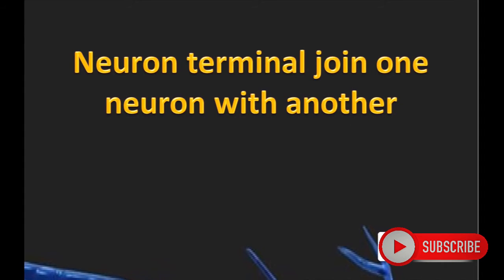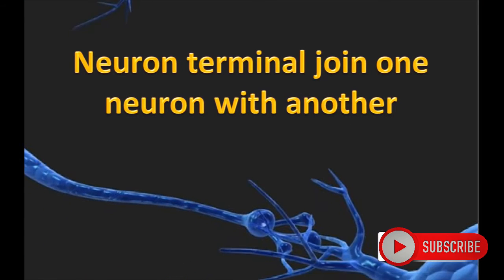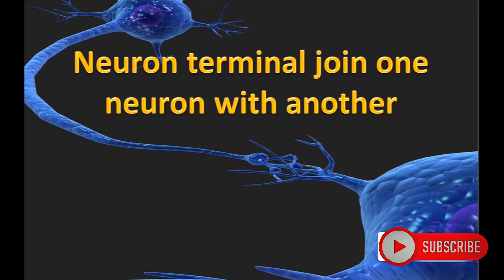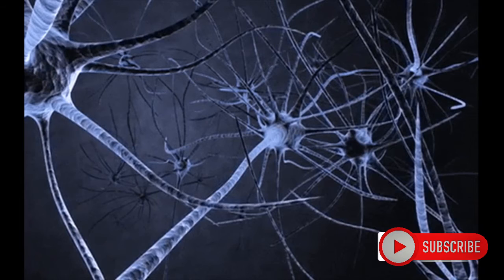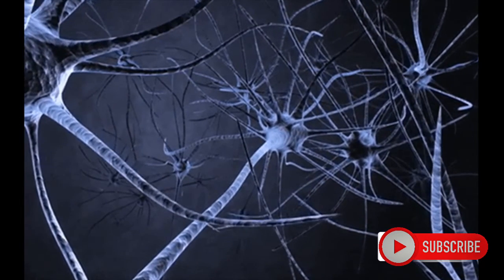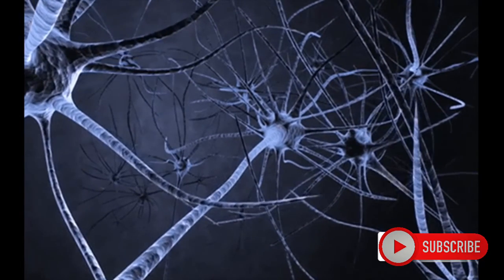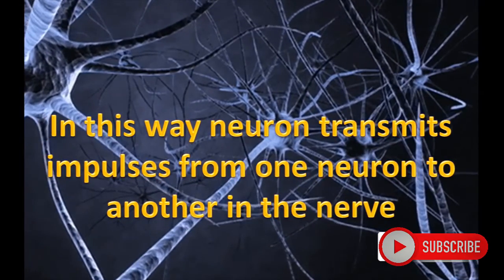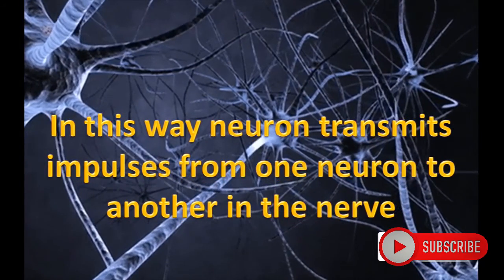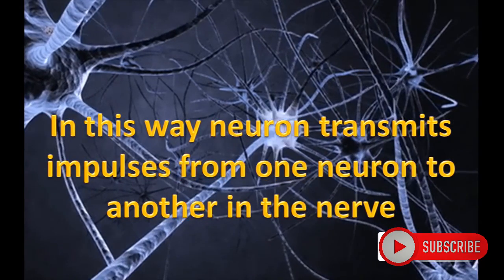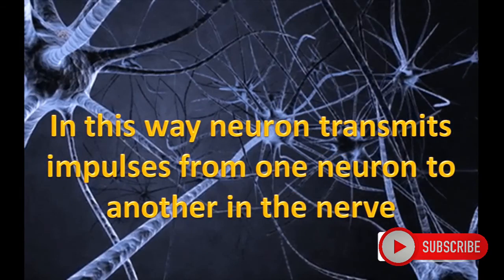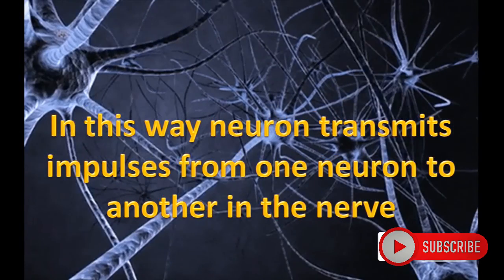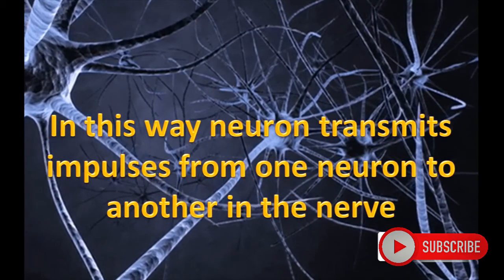Neuron terminals join one neuron with another, and in this way form fibrous nerves. These nerves transmit signals — neurons transmit impulses from one neuron to another through the nerves. In accordance with the function of the nervous system, we have sensation of stimulation and the body shows responses.